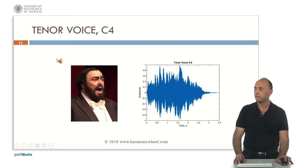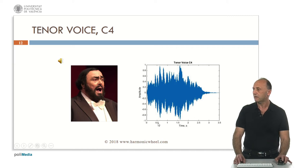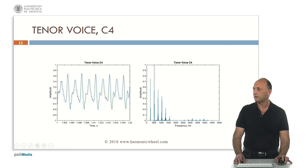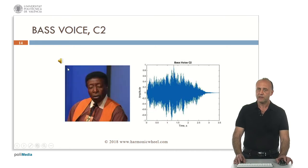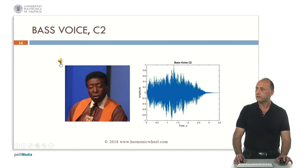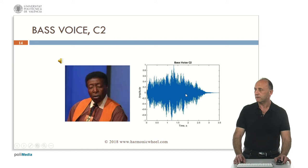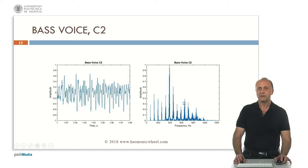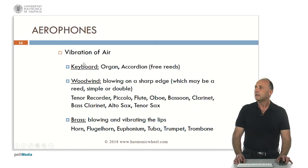Tenor voice, C4. Envelope, waveform and spectrum. Bass voice, this is C2, a very low note. This is the envelope. The spectrum is very complex — it contains many harmonics.